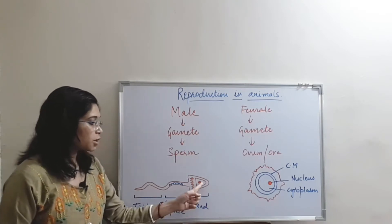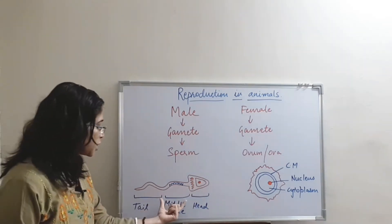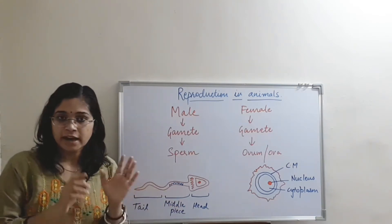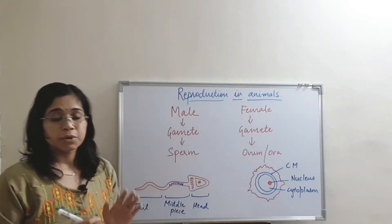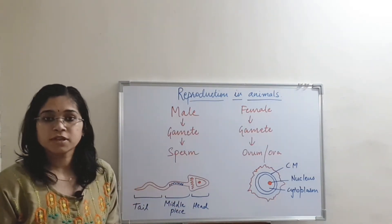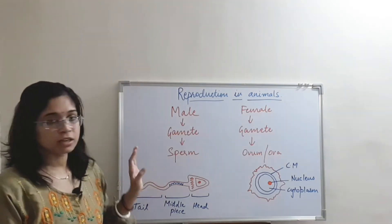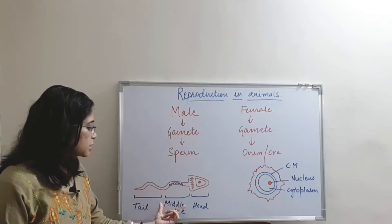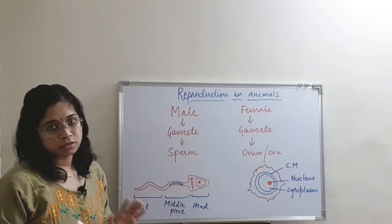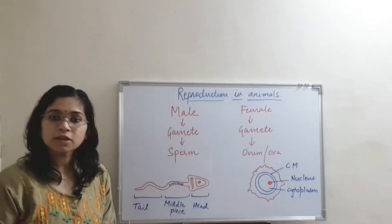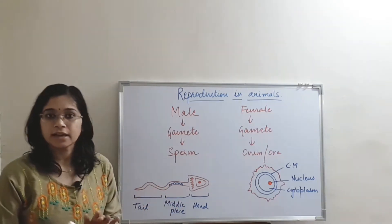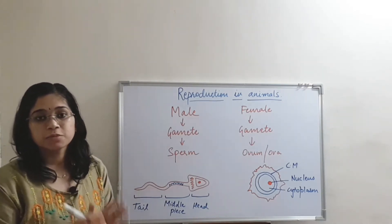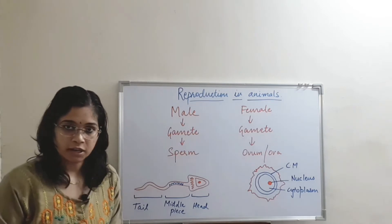The sperm is divided into three parts: head, middle piece and tail. The head contains the nucleus. The middle piece contains mitochondria, and the tail is the end part of the sperm. Because the tail is present, the sperm is able to move and swim in the fluid. The middle piece contains mitochondria, so for the movement of the sperm, it requires energy, and that energy requirement is accomplished because of the presence of mitochondria.